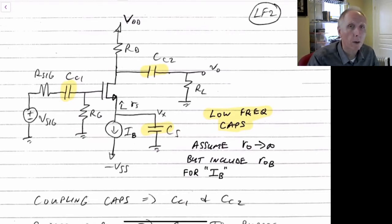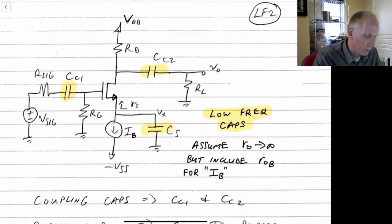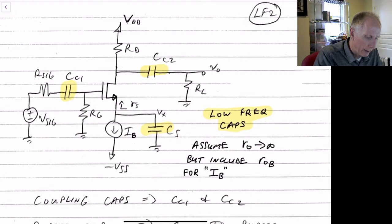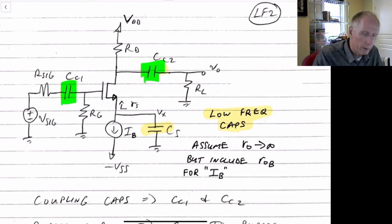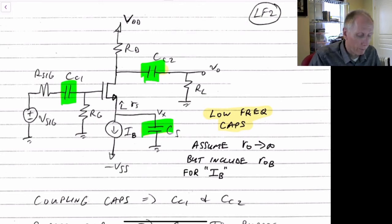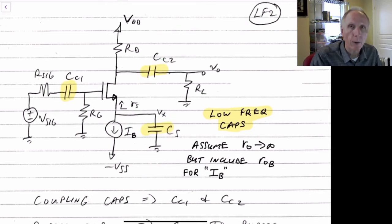Here's an example to discuss the low frequency behavior of an amplifier. We have a common source amplifier — the source is common, the input is at the gate, and the output is taken at the drain. We actually have three low frequency capacitors: C sub C1, C sub C2, and C sub S. All three create low frequency poles. We typically treat them all independently, find the low frequency pole for each one, and then find the highest of those three — that gives our low frequency cutoff.